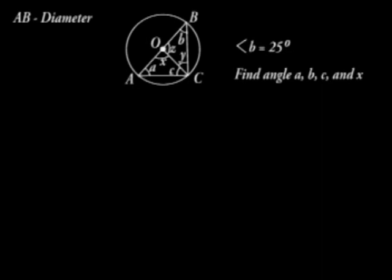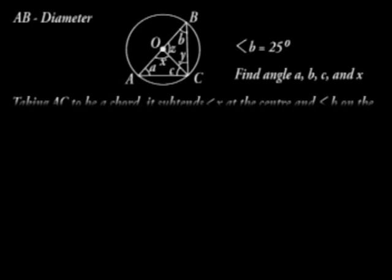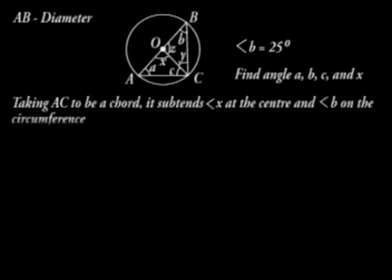Angle B is equal to 25 degrees. Find angles A, B, C and X. In our solution, taking AC to be a chord, it subtends angle X at the center and angle B on the circumference. Therefore, if B is 25, then X is 50 degrees.